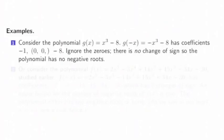So for example, let's look at this polynomial again, x³ - 8. If I plug in -x, I get -x³ - 8. That has coefficients -1, 0, 0, -8. If I ignore the zeros, there's no change of sign. We had -1, we had -8. No change of sign. So there are no negative roots.